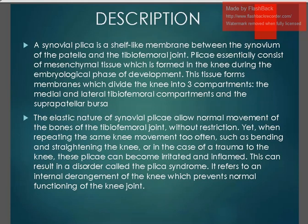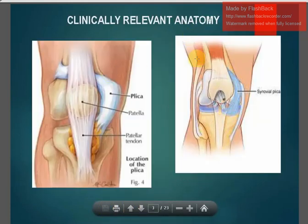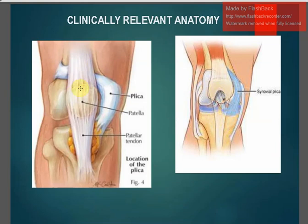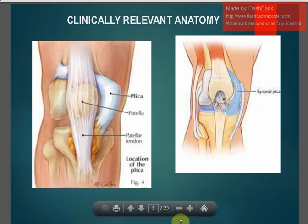Looking at the clinically relevant anatomy of the knee joint, this membranous structure is called the plica. We can see the patella, the patellar tendon, and the location of the plica. There may be medial, lateral, and different types, which we are going to see in detail. The main function is for smooth movements of the knee joint.